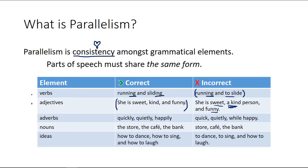Let's look at parallelism and ideas. How to dance, how to sing, and how to laugh. That works great because it's got 'how to' and a verb, 'how to' and a verb, 'how to' and another verb — consistent pattern throughout.